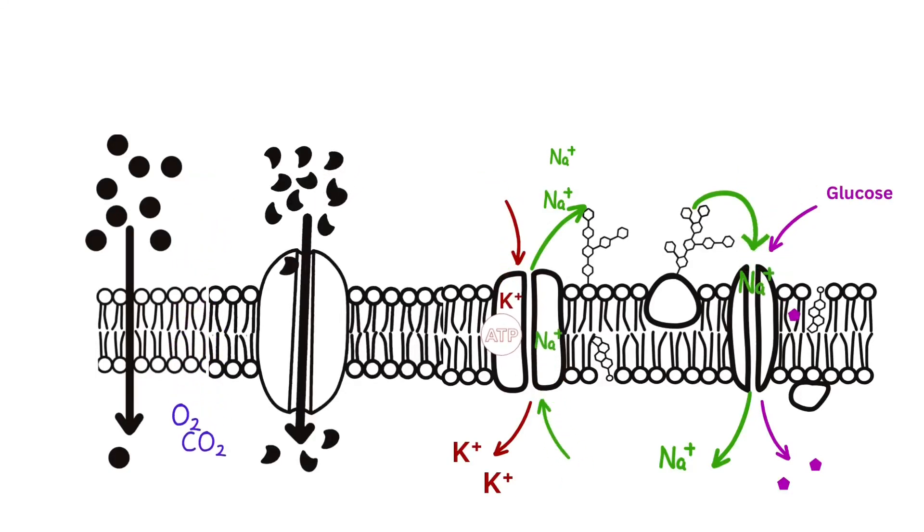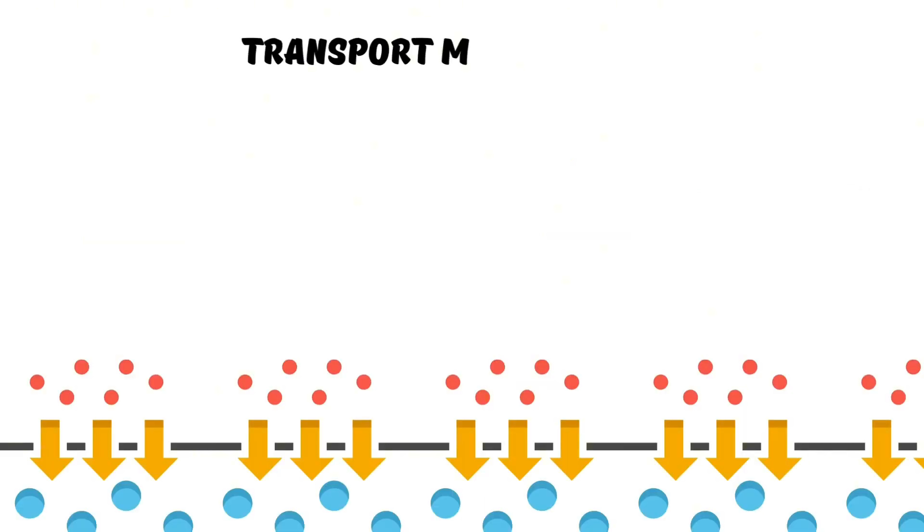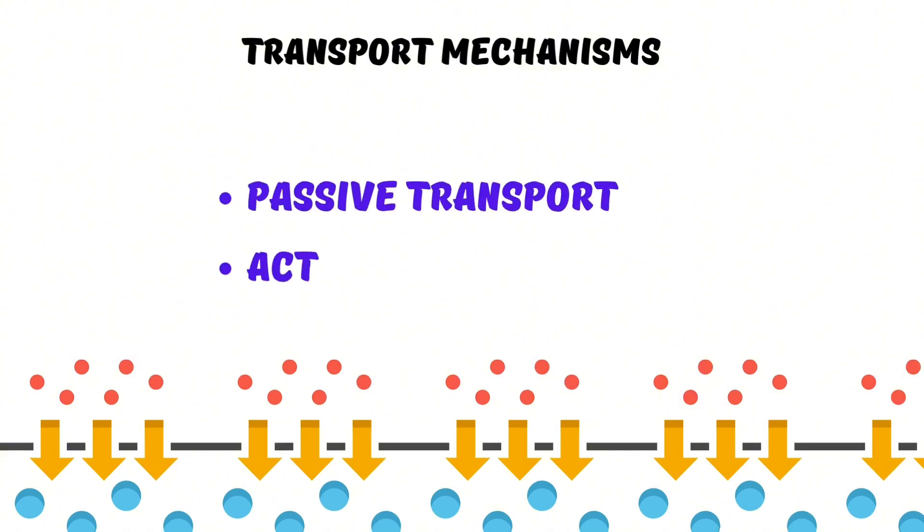In this video I'm going to explain the transport mechanisms across cell membrane. There are two major mechanisms through which molecules are transported across semi-permeable membrane. These two mechanisms are passive transport and active transport.